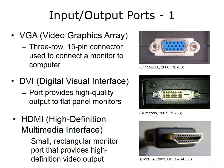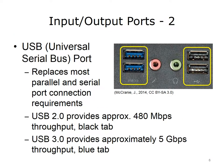The Digital Visual Interface port, or DVI port, provides high-quality output to flat panel monitors. The High Definition Multimedia Interface, or HDMI port, is a small rectangular monitor port that provides high-definition video output. The Universal Serial Bus, or USB port, is rectangular in shape and created to replace most parallel and serial port connection requirements through a common interface type. USB version 2.0, released in the year 2000, provides approximately 480 Mbps throughput. It supports both low-bandwidth devices such as keyboards and mice, and high-bandwidth devices such as webcams.